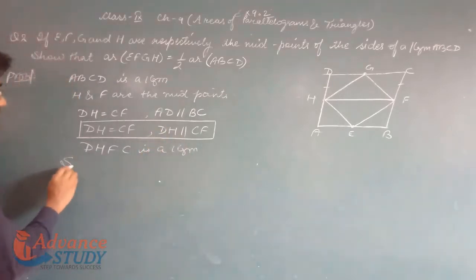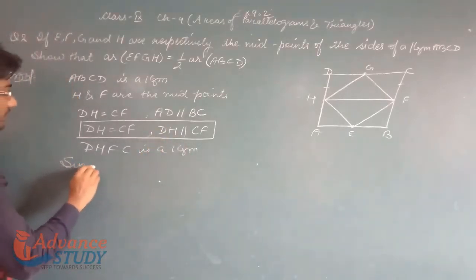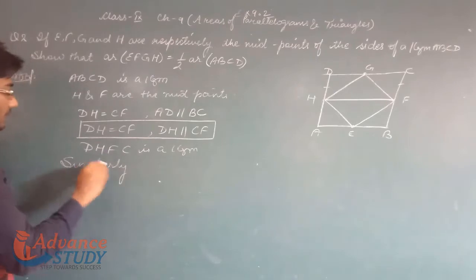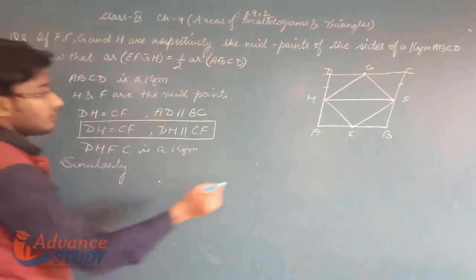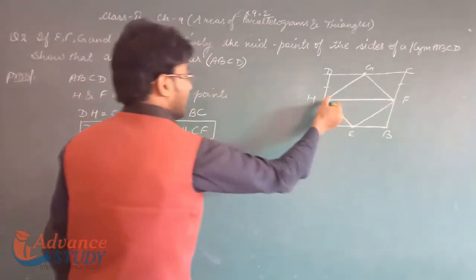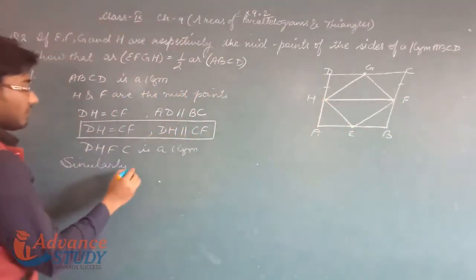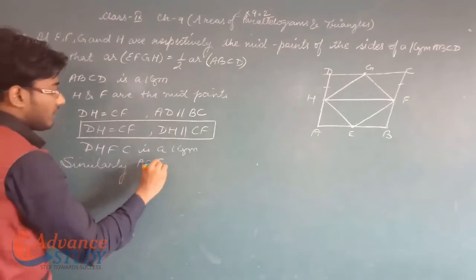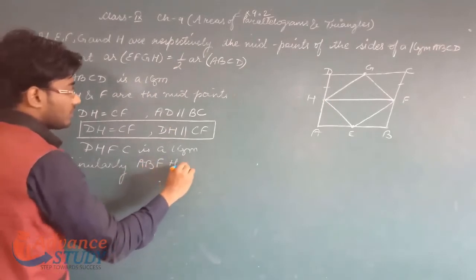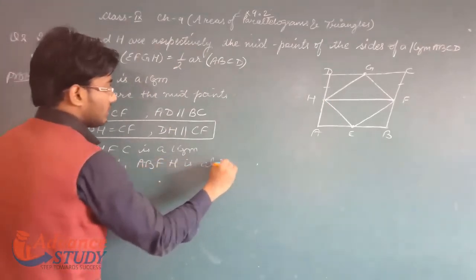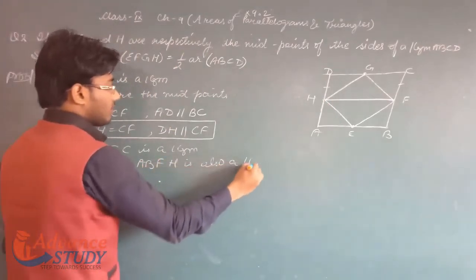Similarly, ABFH is also a parallelogram. Since this side is parallel to that side and equal in length, we can prove ABFH is a parallelogram in the same way.